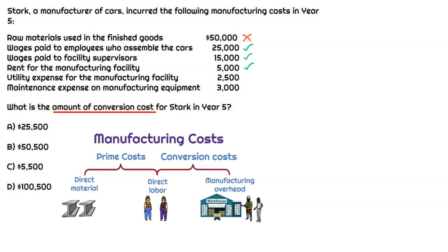How about utility expense for the manufacturing facility? That's going to include electricity, water, and gas. All of those utility costs are necessary to run the manufacturing facility, but just like the rent, we cannot directly trace them to a specific product. So it's going to be part of manufacturing overhead, which is part of conversion costs. Include that.